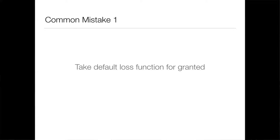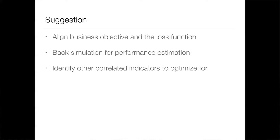Now let's talk about the seven common mistakes. The first one is taking the default loss function for granted. This is directly connected to aligning the business objective to your loss function. For example, say we are building a fraud detection system for Amazon — there are so many transactions. If I pick a classifier, the first question is: what loss function do I use? Do I use accuracy? That sounds intuitive initially, but you'll quickly realize that if you classify all transactions as good, you probably get about 98% accuracy.